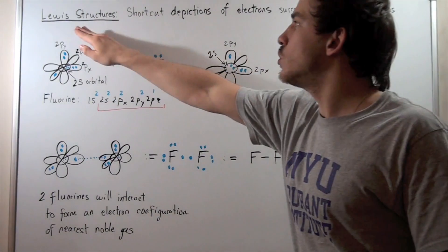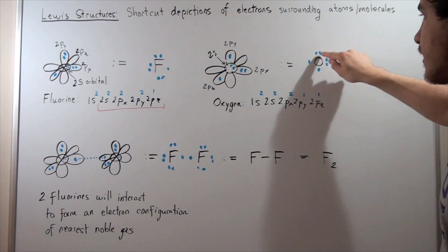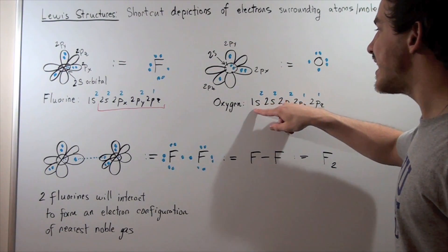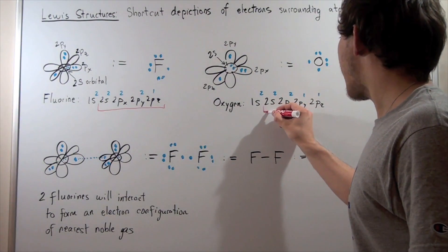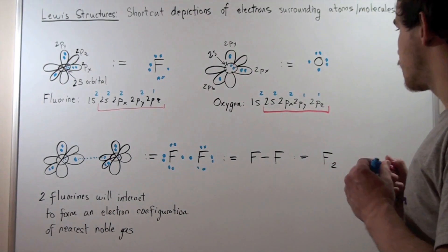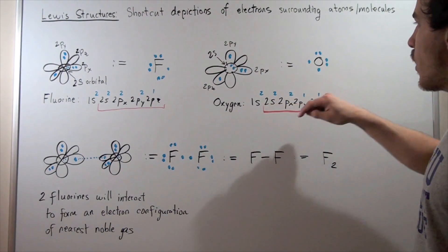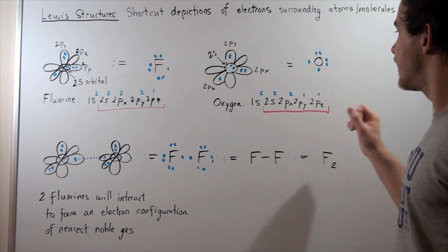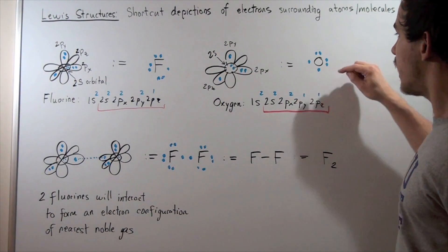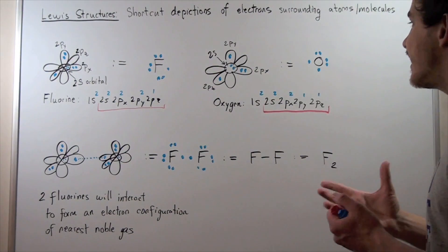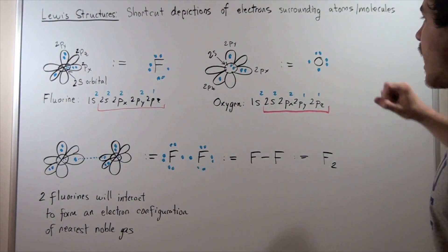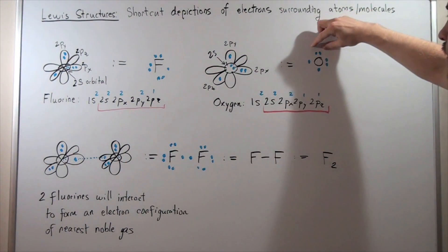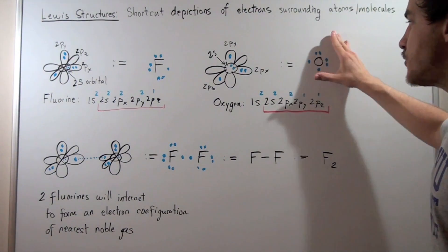Using the Lewis structure method for oxygen, we draw an O and place the two 1s electrons inside the atom. We only worry about the valence electrons. We place two electrons for the 2s on one side, two for the 2px on another side, one for the 2py, and one for the 2pz. It doesn't matter exactly where they're placed, as long as we have one pair, one pair, and two singles. That is the Lewis structure for oxygen.